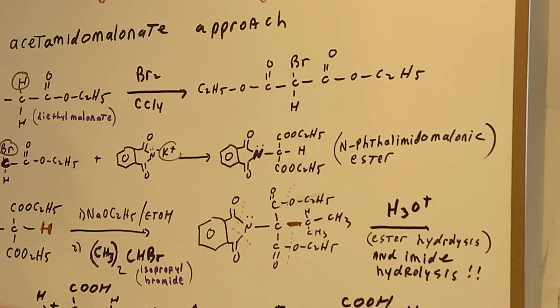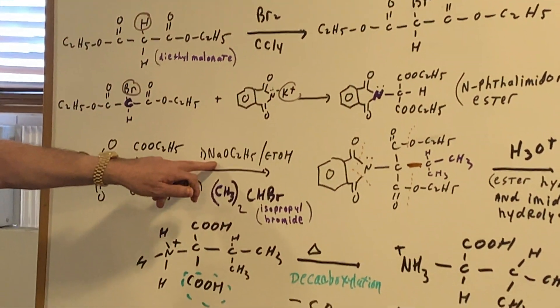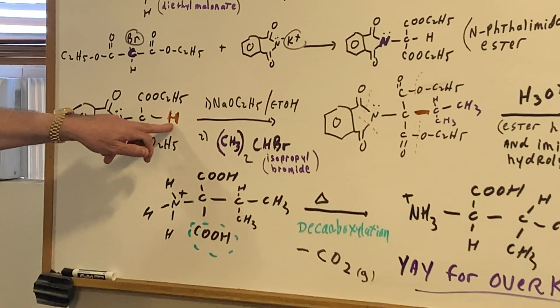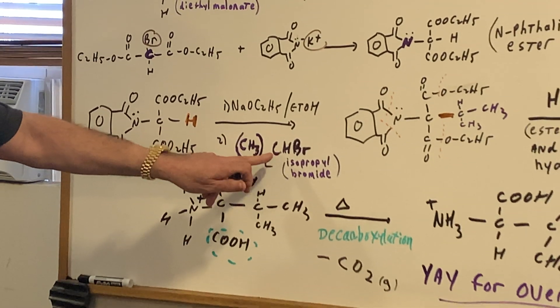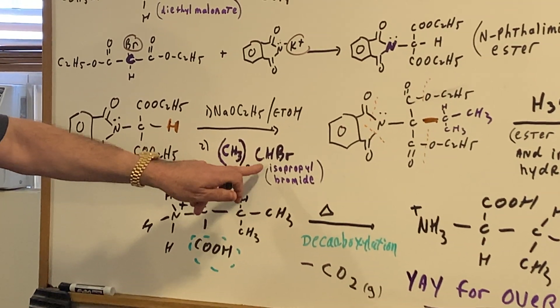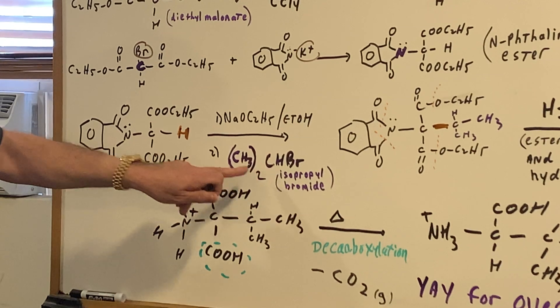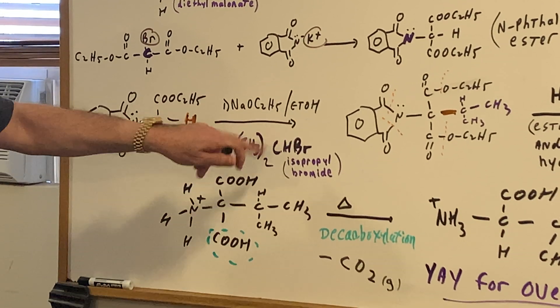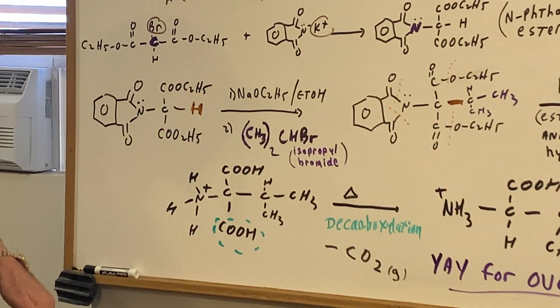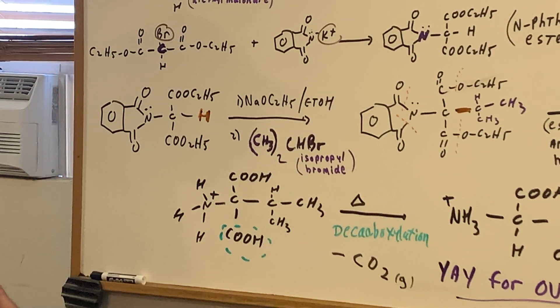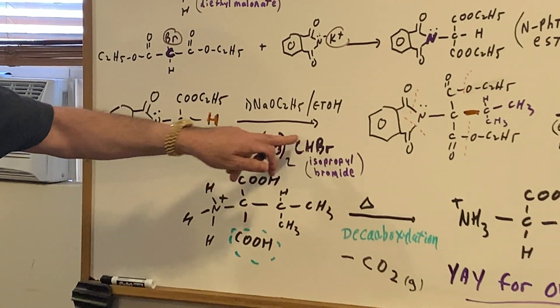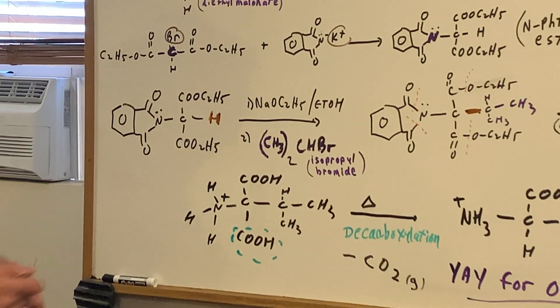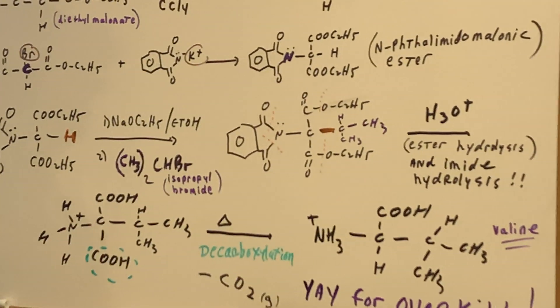Now, once I have this made, the next step, I use sodium methoxide and ethanol. What's that going to do? Remove the double alpha, like we always do. And then we're going to simply do an SN2, and we're going to capture a designated halide. Now, that halide would depend on what amino acid you're going to be making. Since the side chain of valine has this isopropyl group, that's why I'm going to use isopropyl bromide. And that gives us this structure right here.